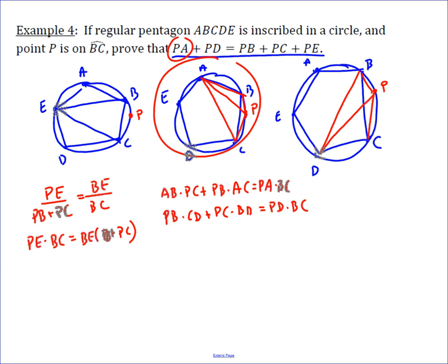If you add these together, first thing you notice is AB and CD are both side lengths, so they're congruent to each other. If I add these two equations together and factor that out of both, I get AB(PC + PB), which is good because I need PC plus PB here.